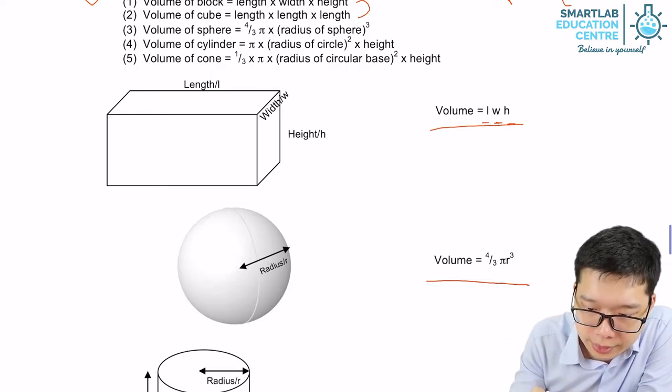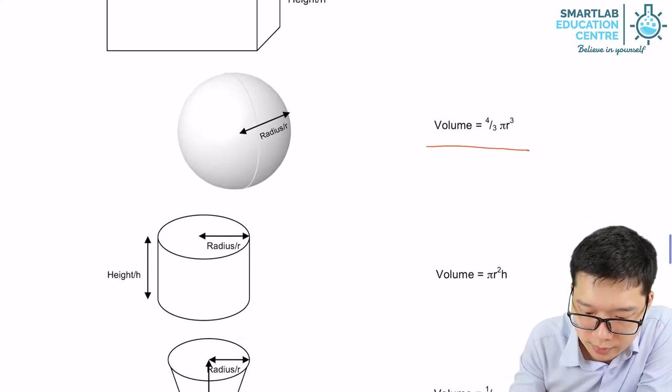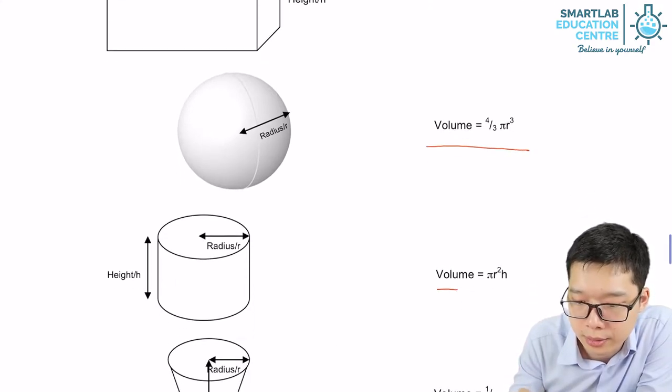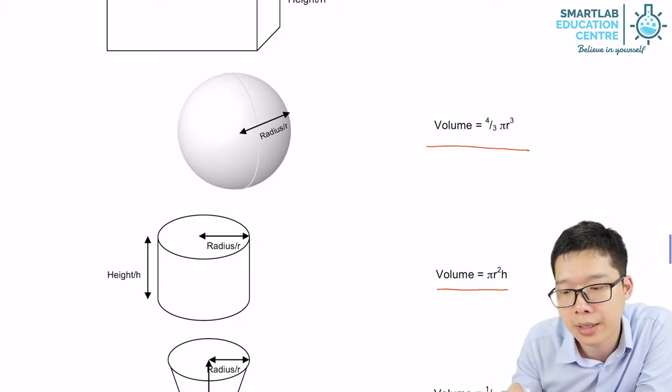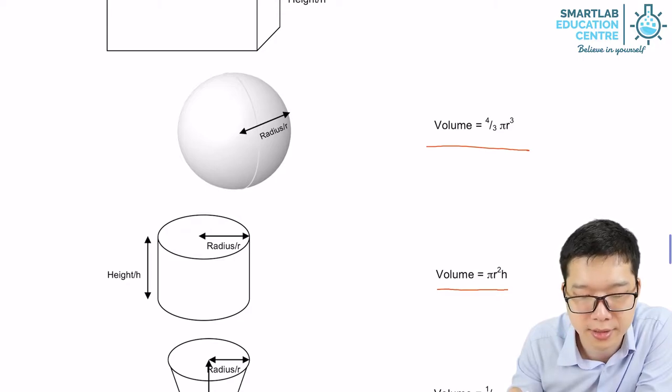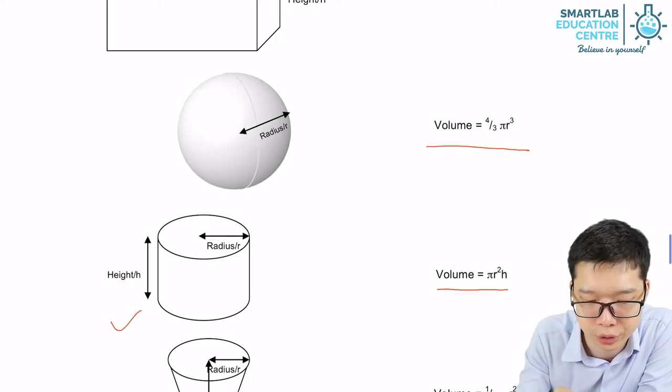And next, cylinder. The formula for the volume of cylinder is pi r squared h. R stands for radius, h stands for height, like the figure shown over here.